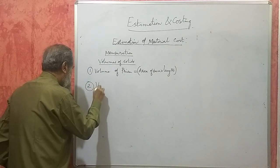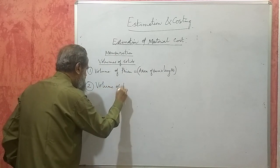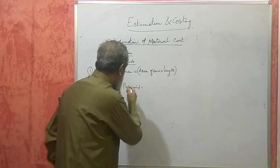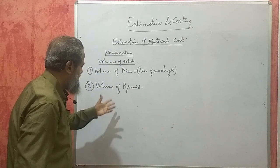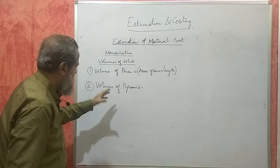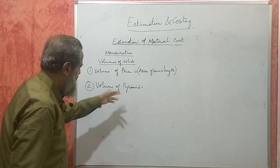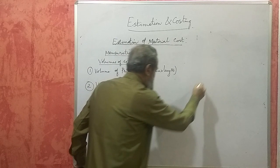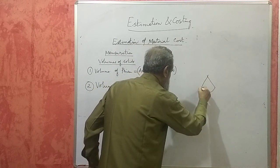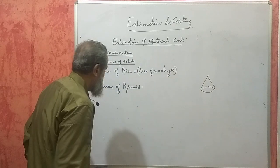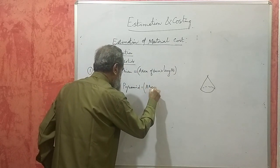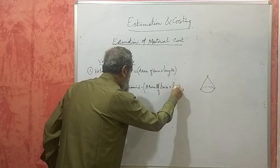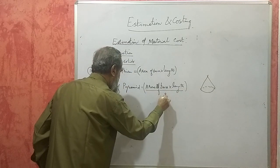Next, volume of a pyramid. The pyramid may be a square pyramid, a triangular pyramid, a hexagonal pyramid, or a circular pyramid. A circular pyramid is called a cone. Again, the formula is: area of base into length divided by three.